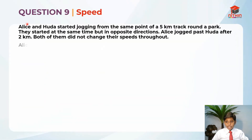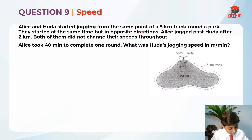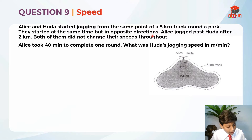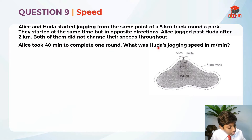So this is question 9. Question 9 is testing us on speed. Let's read the question first. Alice and Huda started jogging from the same point of a 5km track round the park. They started at the same time but in opposite directions. Alice jogged past Huda after 2km. Both of them did not change their speeds throughout. Alice took 40 minutes to complete one round. What was Huda's jogging speed in meters per minute?